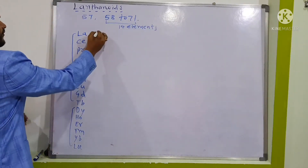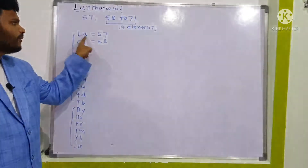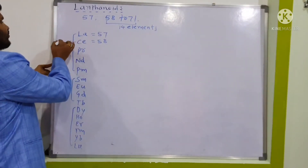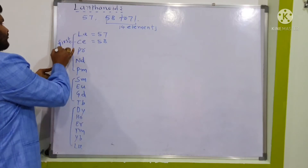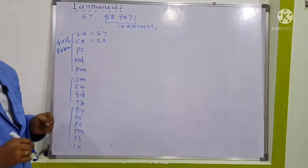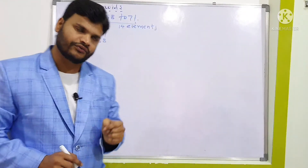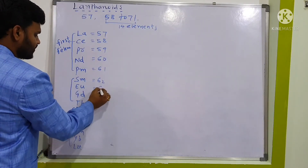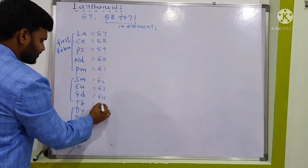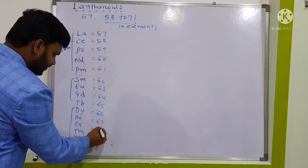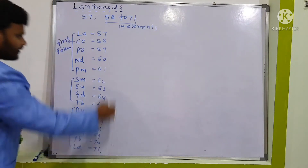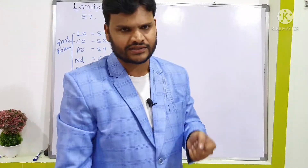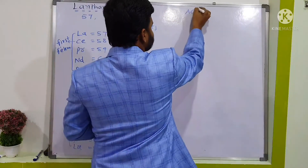Note that lanthanum (atomic number 57) is actually a D block element — the 4F series starts after lanthanum. So the first F block element is cerium, with atomic number 58, followed by 59, 60, 61... through to 71. Practice the mnemonic LCP NP SET DETAIL two to three times and it will come automatically.